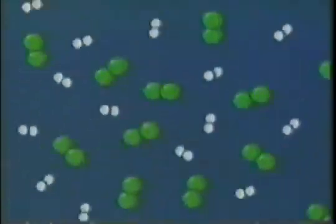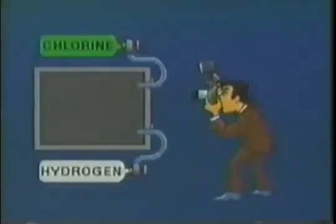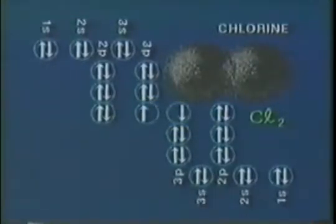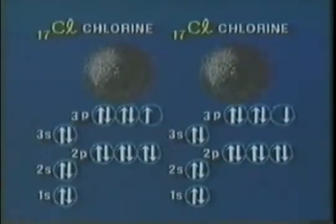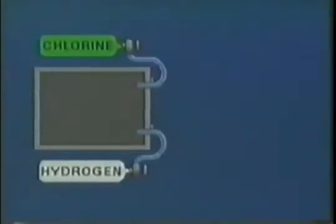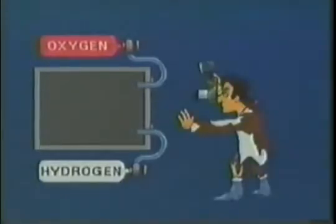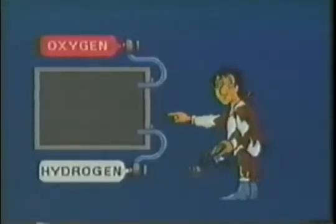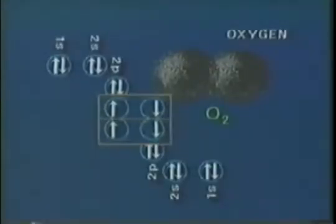The mixture of hydrogen and chlorine requires very little energy to initiate a reaction — nothing more than a flash of bright light provides enough energy to break the single covalent bonds of some chlorine and hydrogen molecules. Since diatomic molecules of oxygen have a double covalent bond, more energy is required to break the bond, and a flash of bright light will not trigger the reaction.